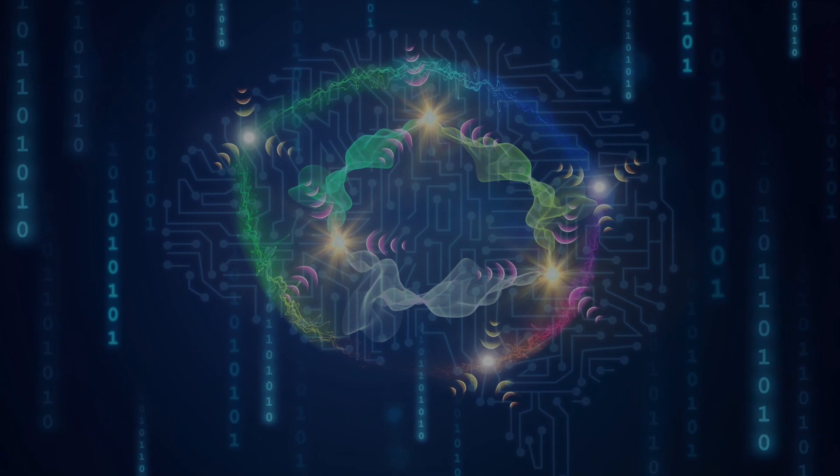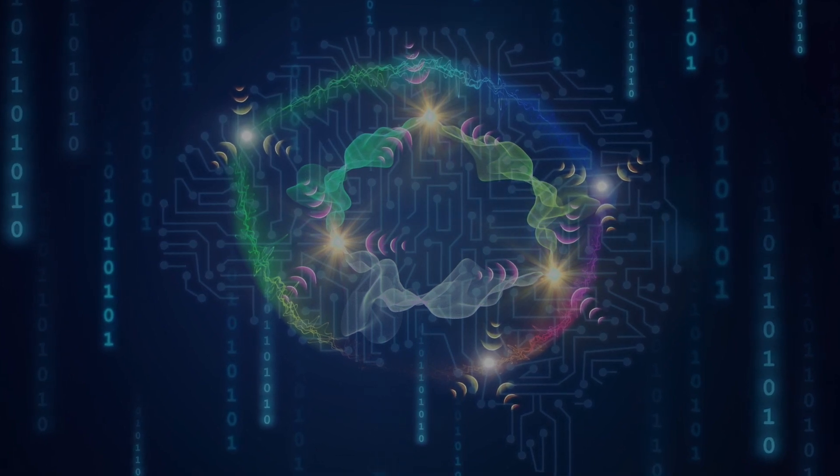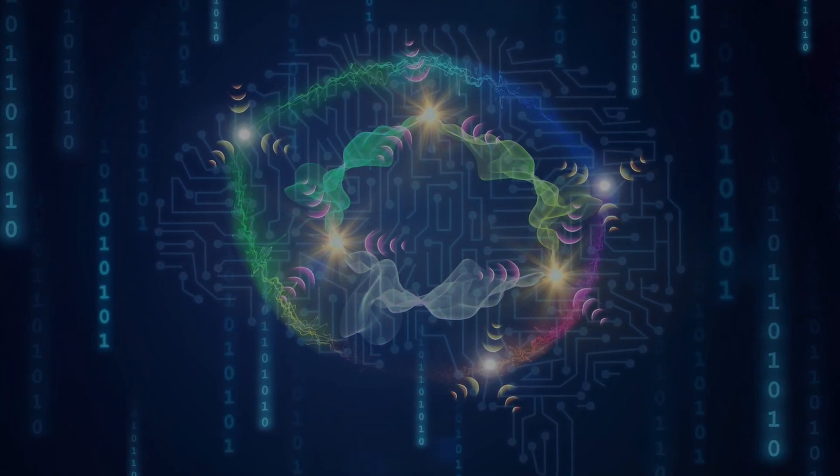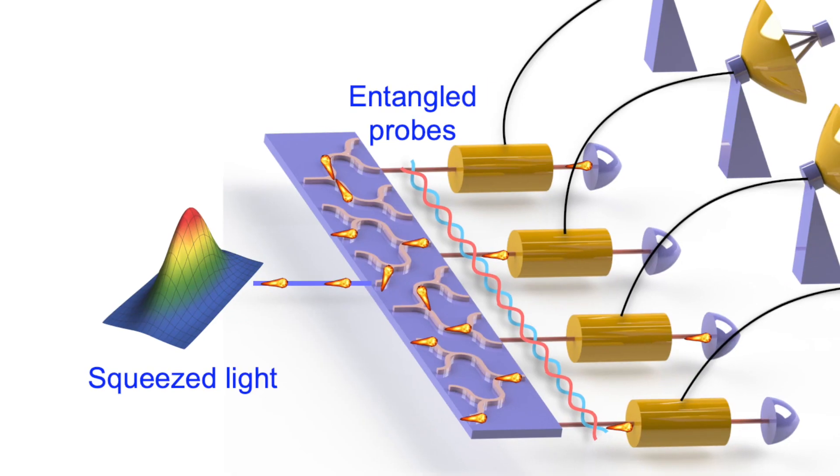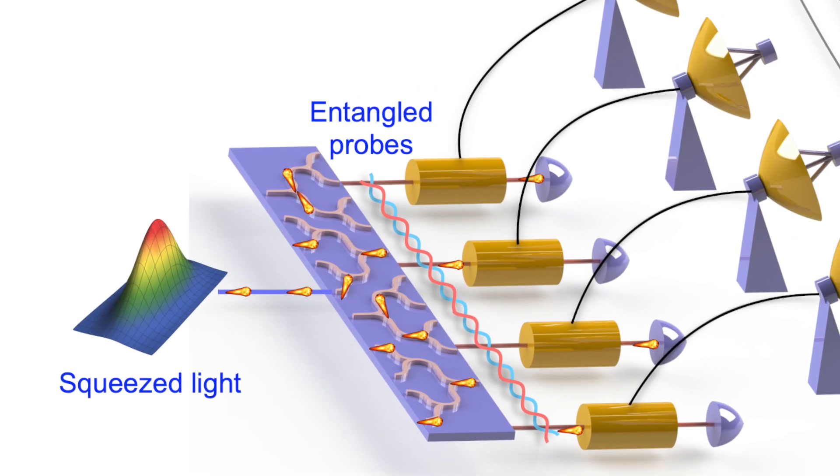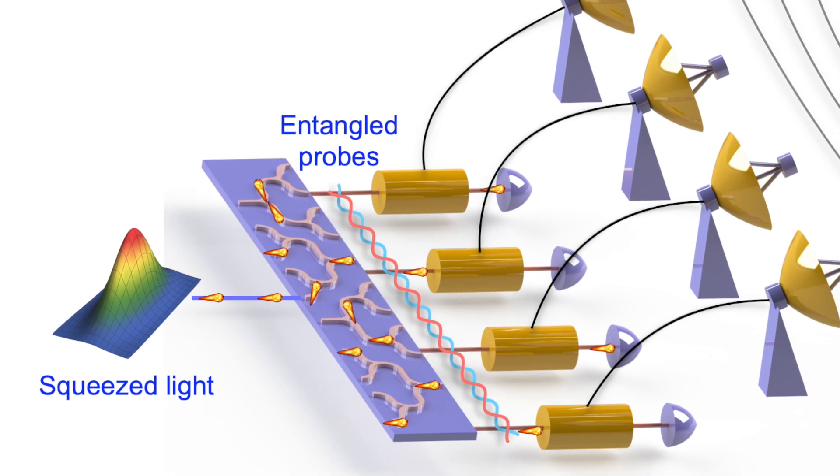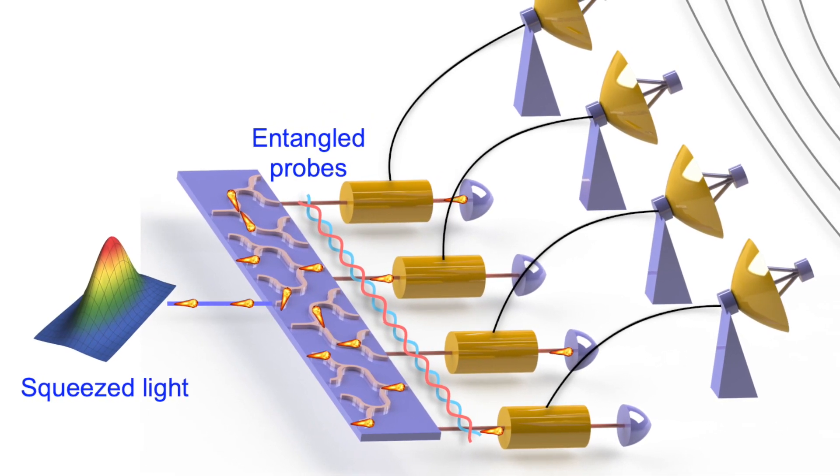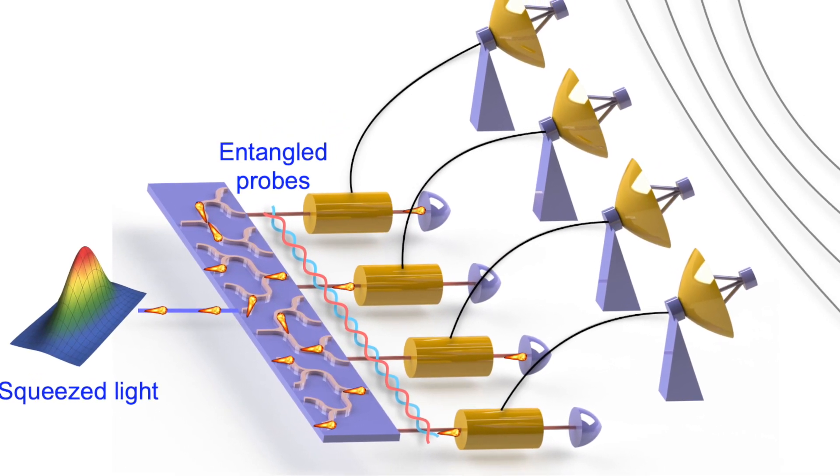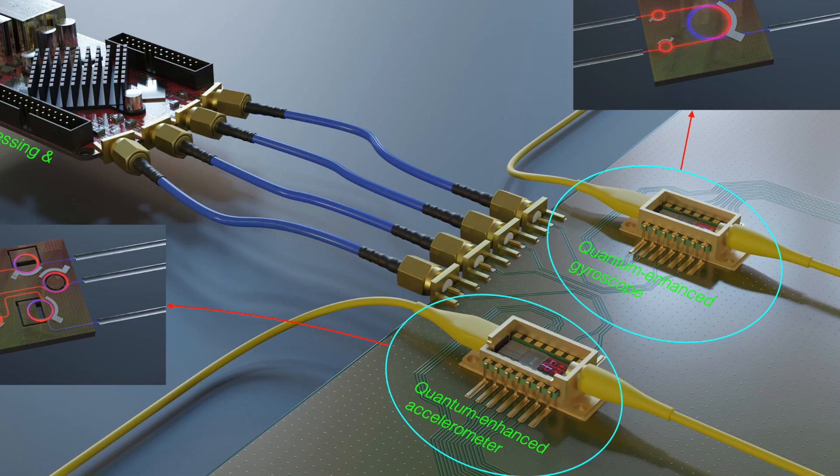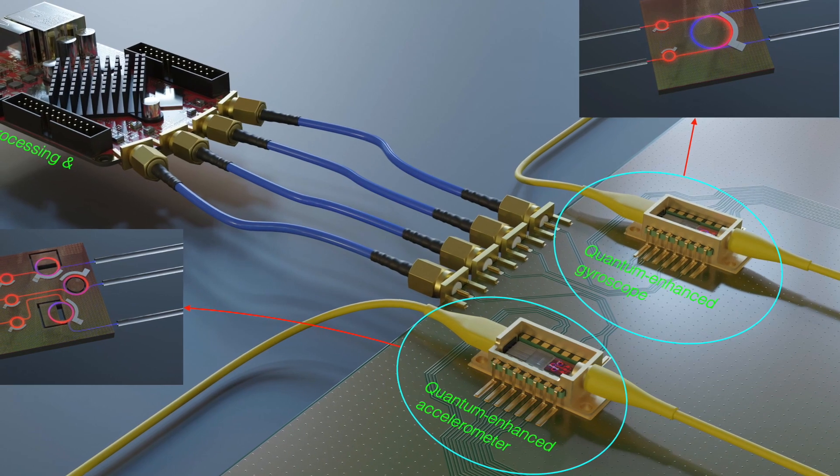In sensing, improving the measurement performance has been a long sought-after goal, but conventional sensors are limited by quantum mechanical noises. In our approach, we take advantage of squeezed light or entanglement to suppress the conventional noise floor, so that we can achieve superior performance in sensing, thereby overcoming some of the fundamental limits of conventional sensors.